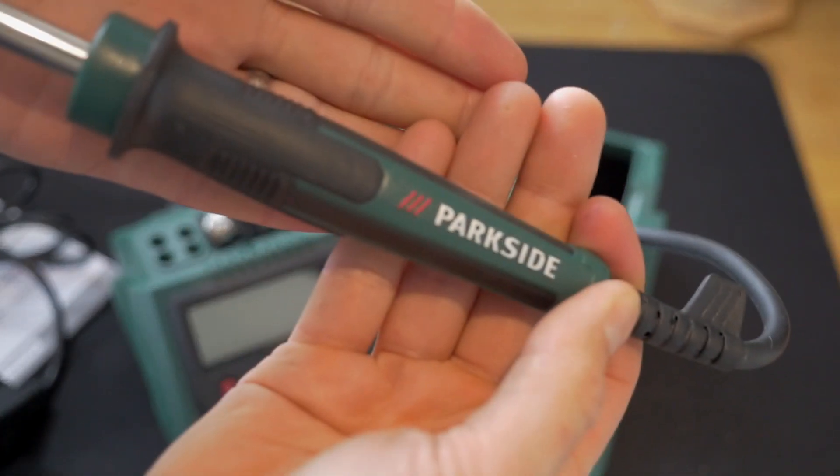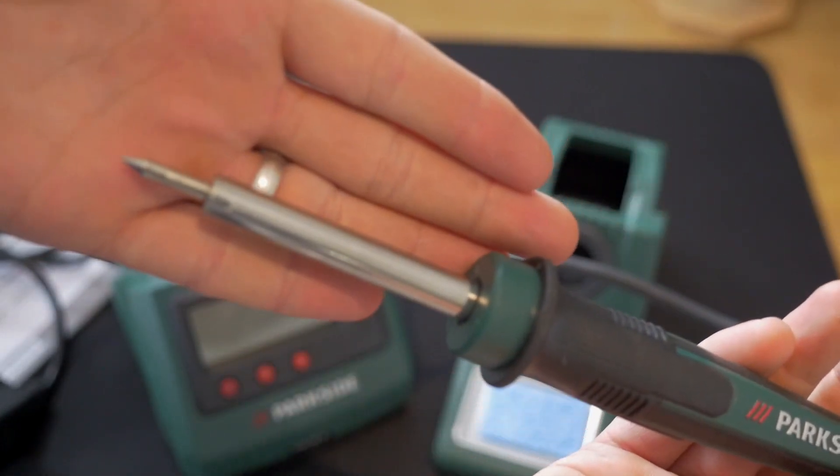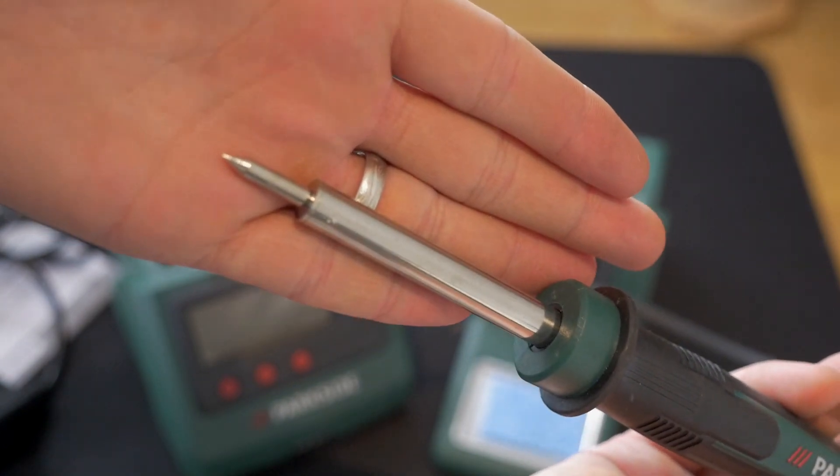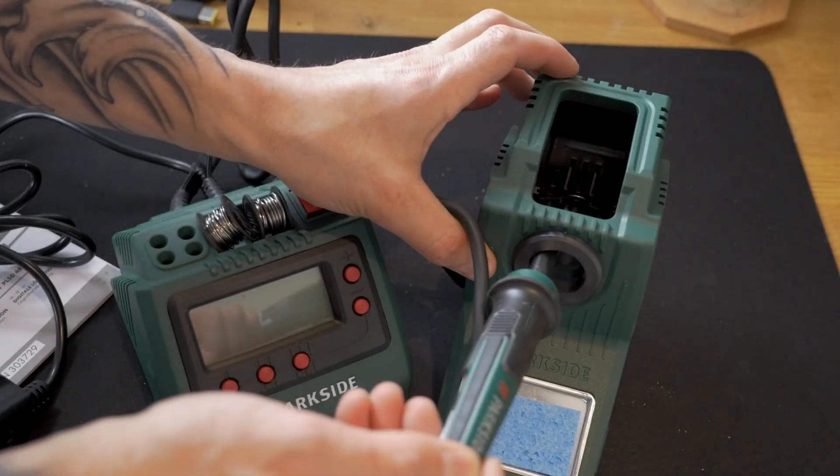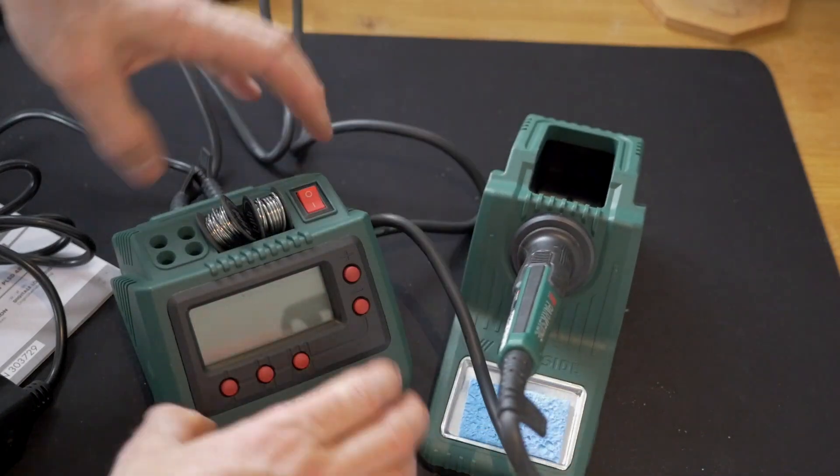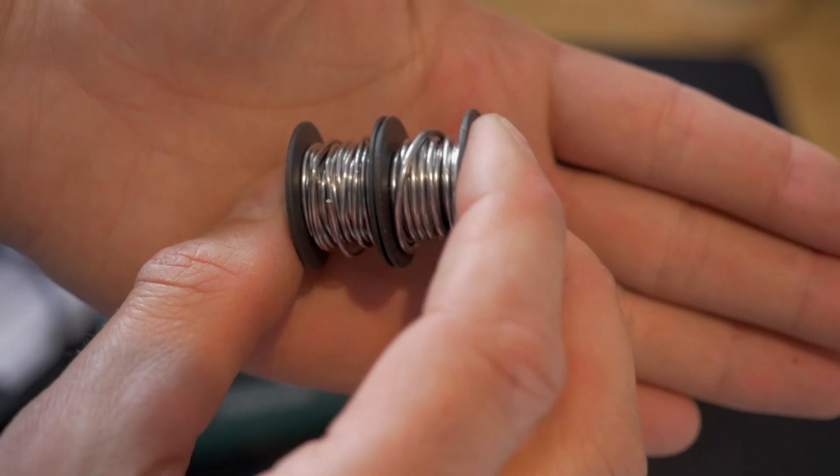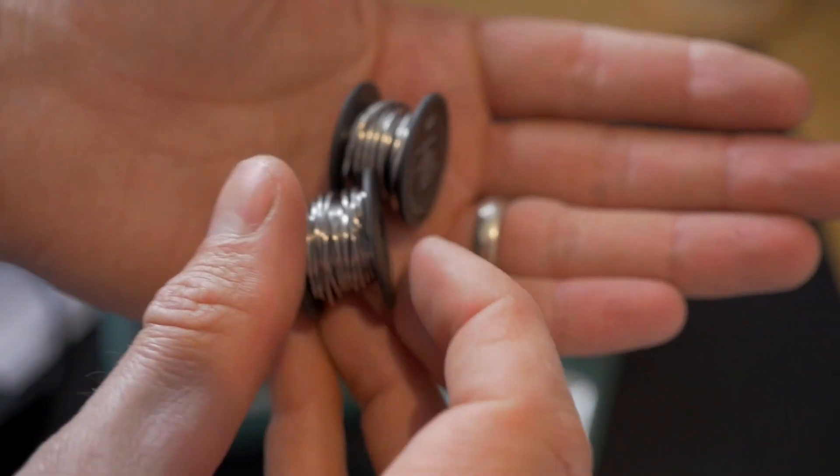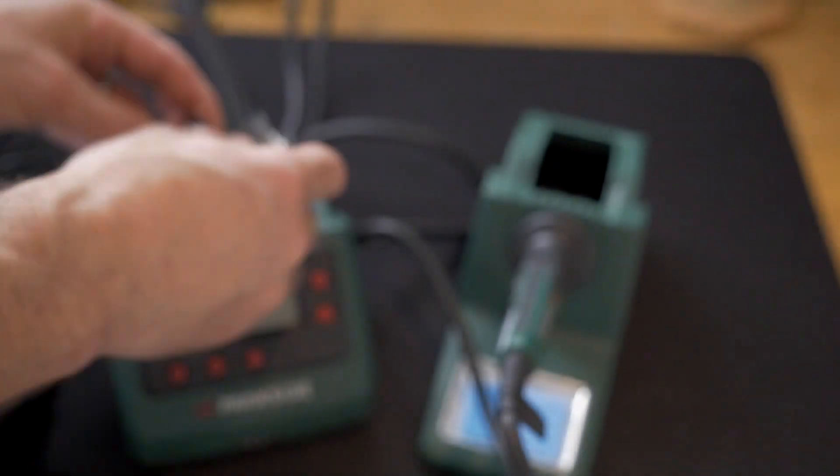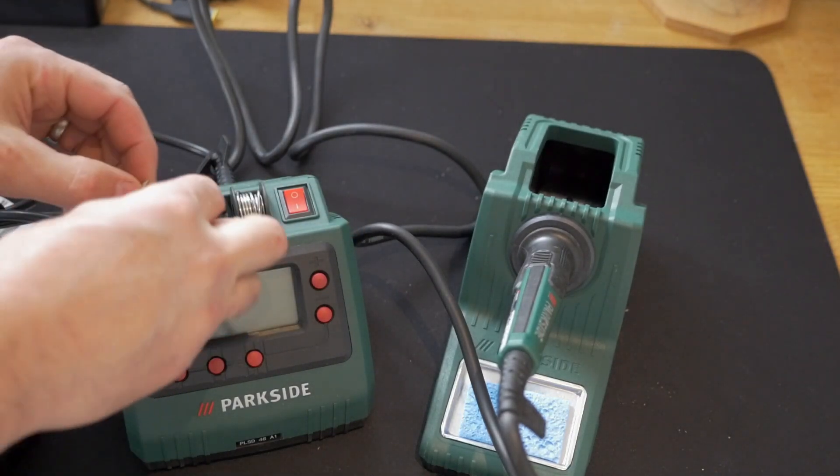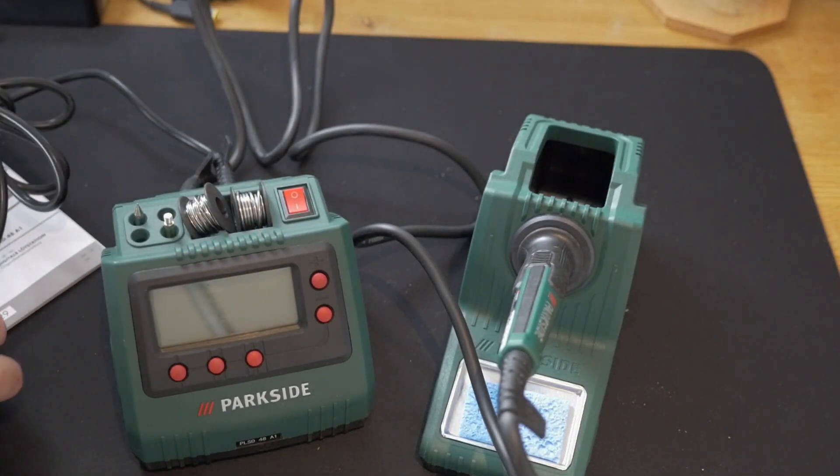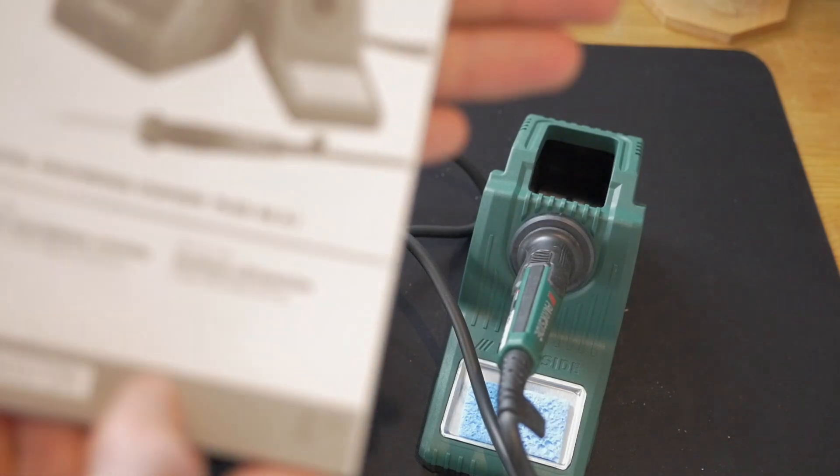Parkside soldering iron with a pretty decent tip. That looks pretty good to me. Two pieces of solder. We have a thick and a thin piece of solder. They're little reels. I guess the tips go in that top part. Is that where they go? And we have some instructions.